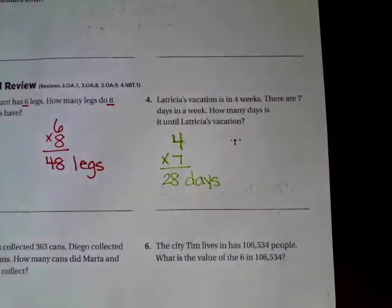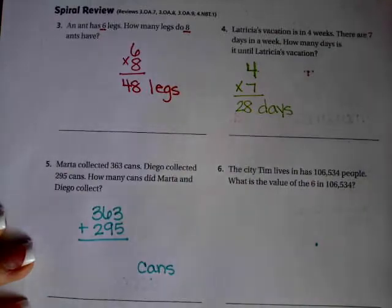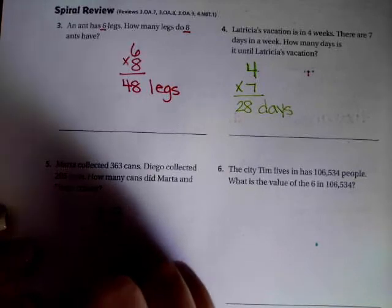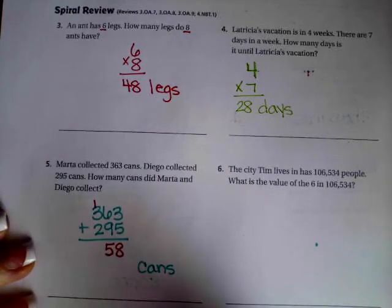Marta collects 363 cans. Diego collected 295 cans. How many cans did Marta and Diego collect? So 363 plus 295, and whatever that answer is, we're going to make sure that we label it cans. It wants to know how many cans. Three plus five is eight, six plus nine is fifteen, five down carry the one, one plus three is four plus two more is six. Six hundred and fifty-eight cans.